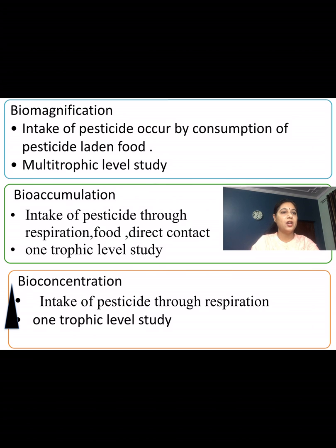In the comparative chart: bioconcentration includes intake of pesticide only through respiration and works at one trophic level. Bioaccumulation includes intake through all means — respiration, food, or direct contact — and also affects one trophic level. In biomagnification, the intake of pesticide is through consumption of animals with bioaccumulated pesticides, and the level of pesticide increases with each rise in trophic level.